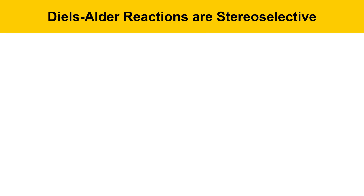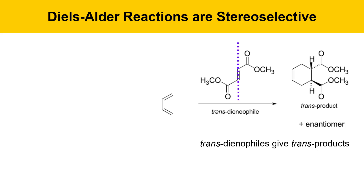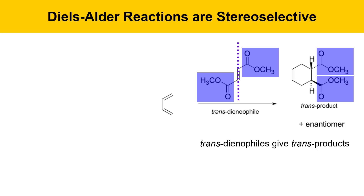Diels-Alder reactions are stereoselective. If you start with a trans dienophile, you get a trans product. For example, 1,3-butadiene reacting with a trans dienophile gives a trans Diels-Alder product. In the dienophile, the two ester groups on the alkene are on opposite sides of the double bond — that's what makes it trans. In the Diels-Alder product, those two esters point in different directions in space: one has a dash bond pointing away, while the other has a wedge bond pointing up.